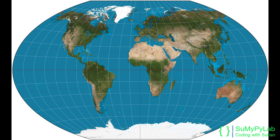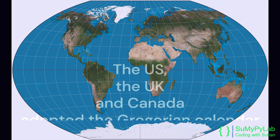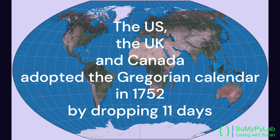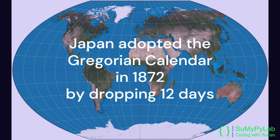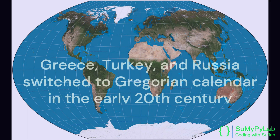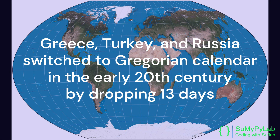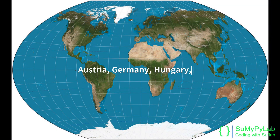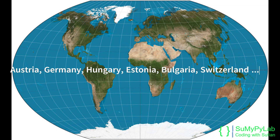Later, most of the countries adopted the Gregorian calendar. For example, the US, the UK, and Canada adopted it in 1752 by dropping 11 days. Japan adopted the Gregorian calendar in 1872 by dropping 12 days. Greece, Turkey, and Russia switched to the Gregorian calendar in the early 20th century by dropping 13 days. One by one, the same thing happened in other countries also.